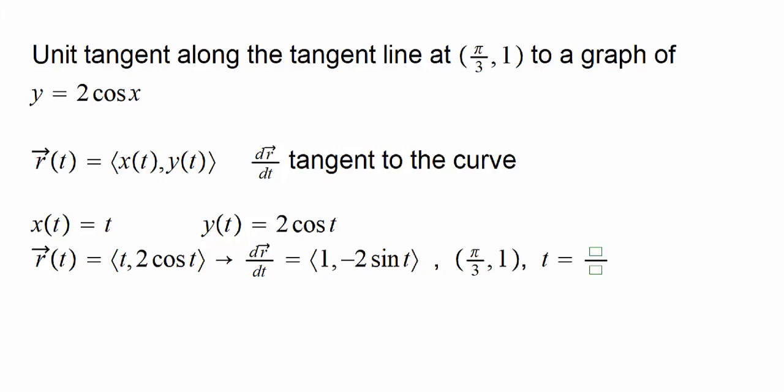So, if I calculate this quantity, d r over dt at pi over 3, then what that will be, all I have to do is substitute t equals pi over 3 in here, and sine of pi over 3 being square root of 3 over 2. So, what will that do for us? This 2 will cancel that 2 in the denominator, and what we would get simply is,